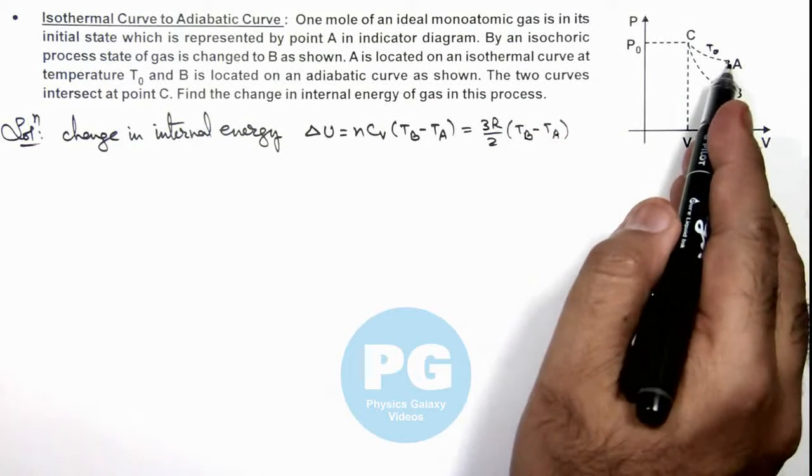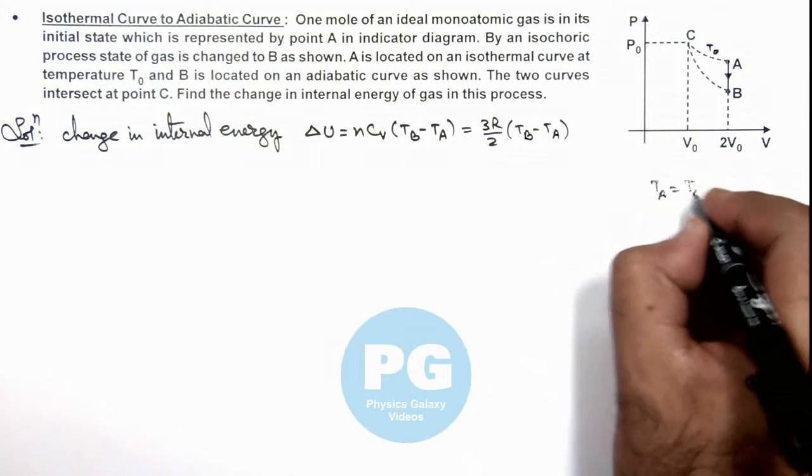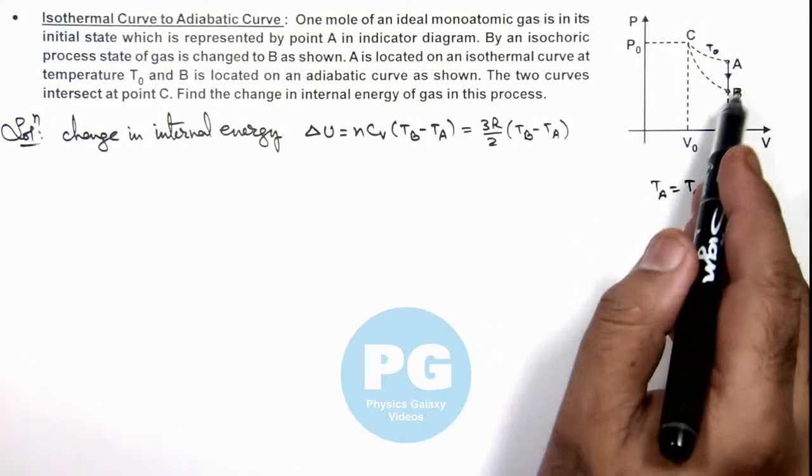TA we are already given as T₀, because it is on an isothermal curve of temperature T₀. TB we are required to find.